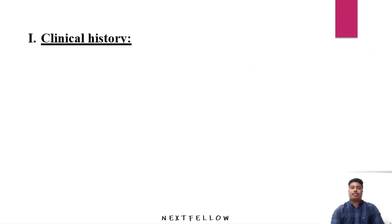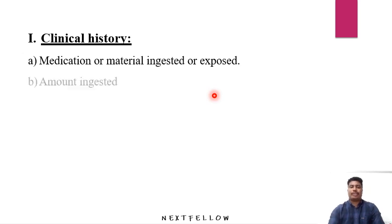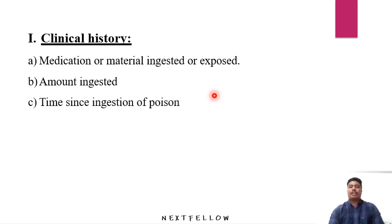In clinical history, the first point is the medication or material ingested or exposed — sometimes the patient comes saying they have taken a particular medicine, or relatives give a history of organophosphorus poisoning. The second point is the amount ingested, such as 100 ml or one bottle, which helps adjust the antidote dose. The third point is the time of ingestion, which helps determine whether gastric lavage should be done or whether the poison has already been absorbed into systemic circulation.